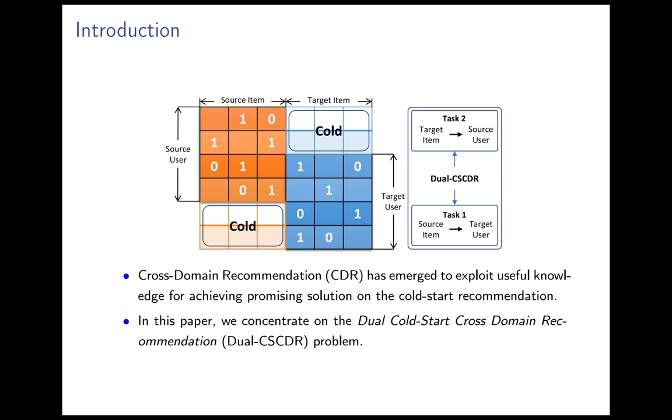In this paper we concentrate on Dual Cold Start Cross-Domain Recommendation, that is providing the most relevant items in the domain for new users in other domains in a bidirectional way without other accelerated representations.